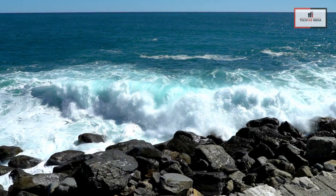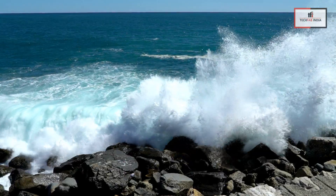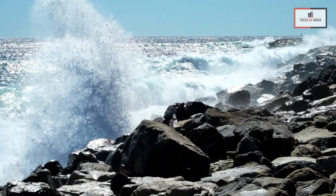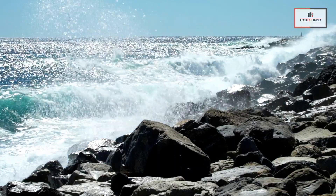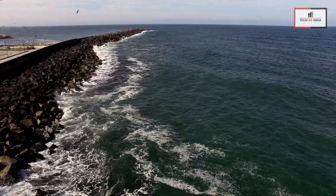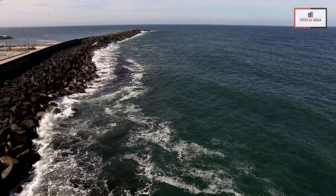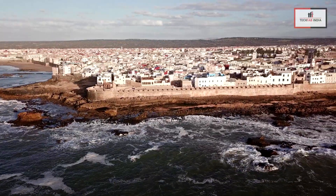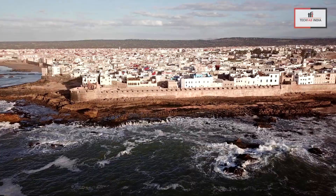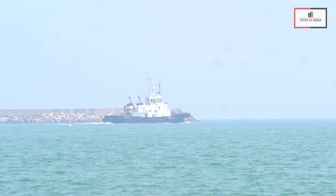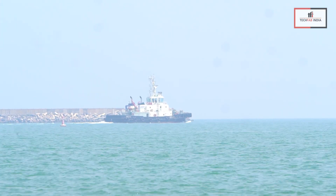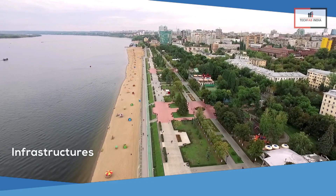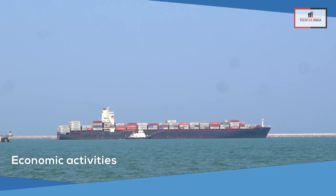Furthermore, climate change, sea level rise and storm surges add another layer of complexity to the diminishing coastlines. Without apt coastal protection measures, an eroded coastline can ravage waterfront establishments and public property. Therefore, coastal structures are imperative to protect the environment, ecology, infrastructures and economic activities by shore.